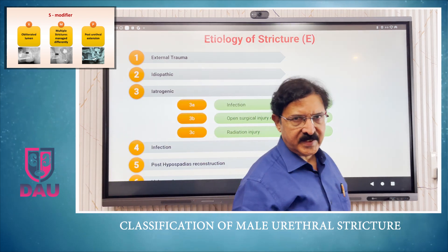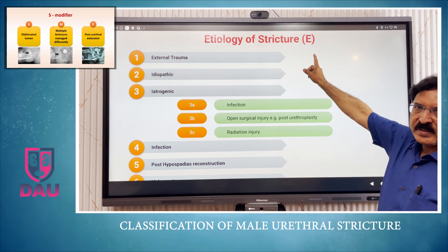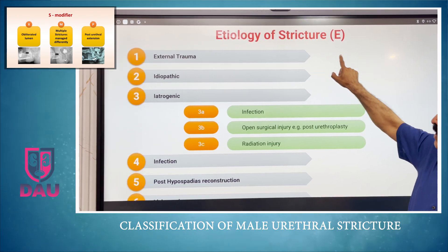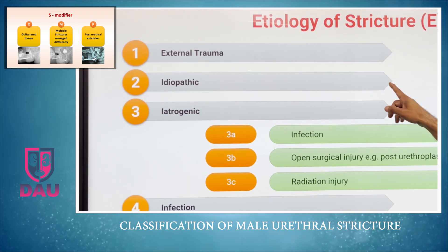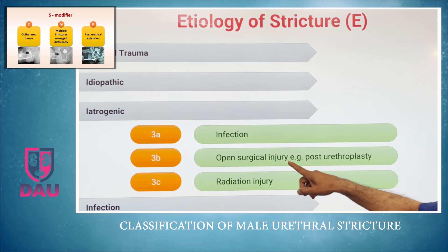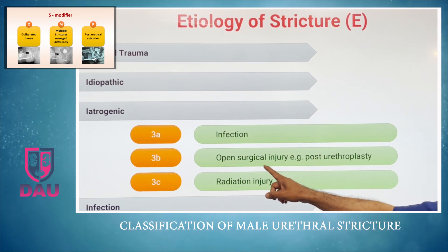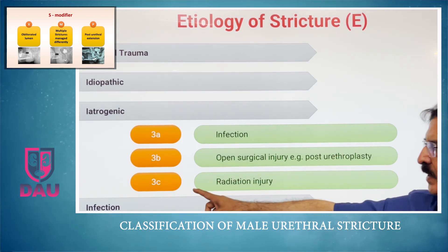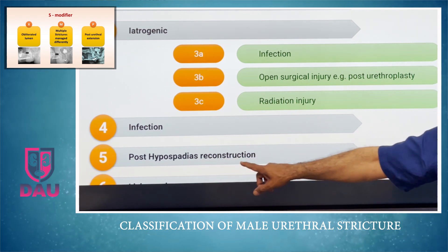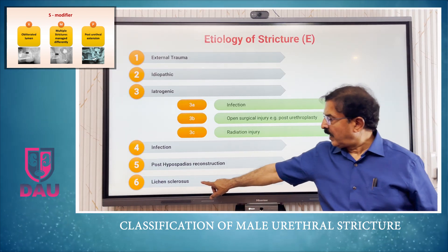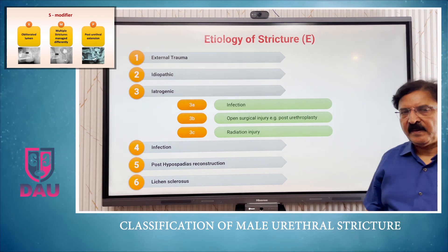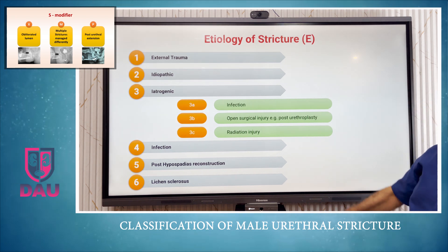The E in LSE stands for etiology of the stricture. Six etiologies are defined: first, external trauma; second, idiopathic, where the cause is unknown; third, iatrogenic, further subdivided into A (instrumentation as a cause), B (open surgical injury such as prior urethroplasty), and C (radiation injury); fourth, infection; fifth, post-hypospadias reconstruction; and sixth, lichen sclerosus. The etiology is generally determined through history taking and patient information.